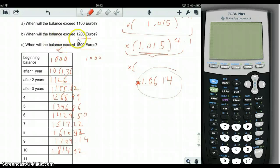And when will the balance exceed 1,200 euros? That would be year 4, right? When will the balance exceed 1,500 euros? Well, that would be year 7.